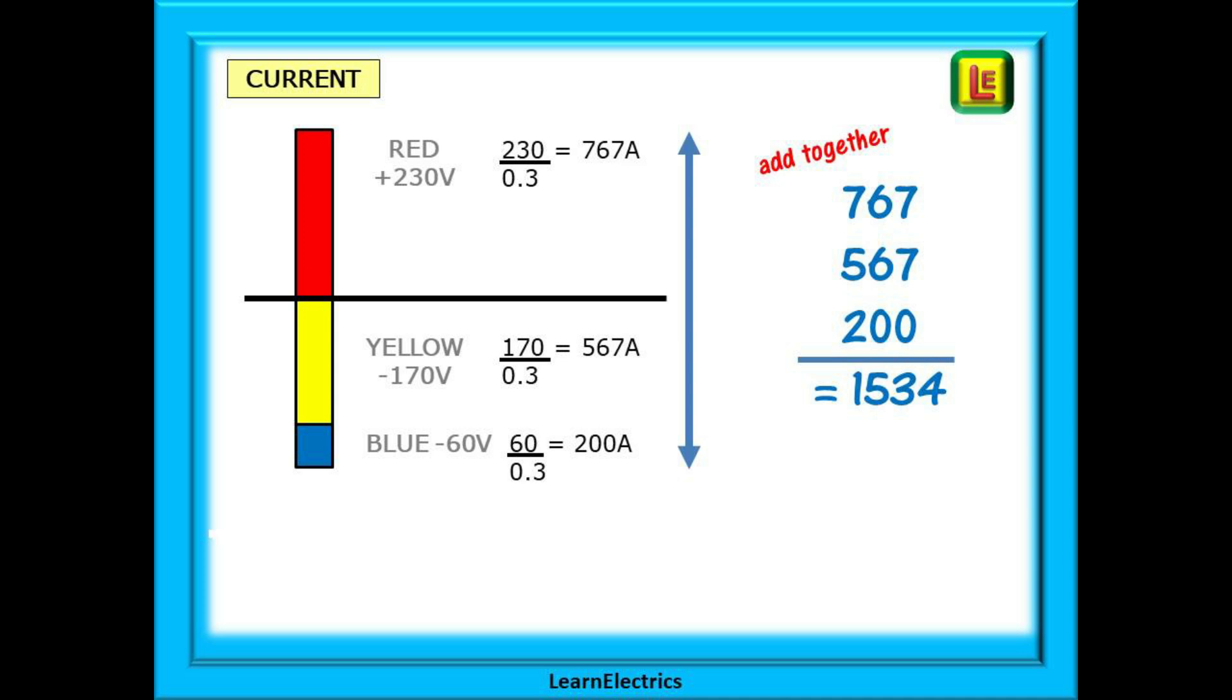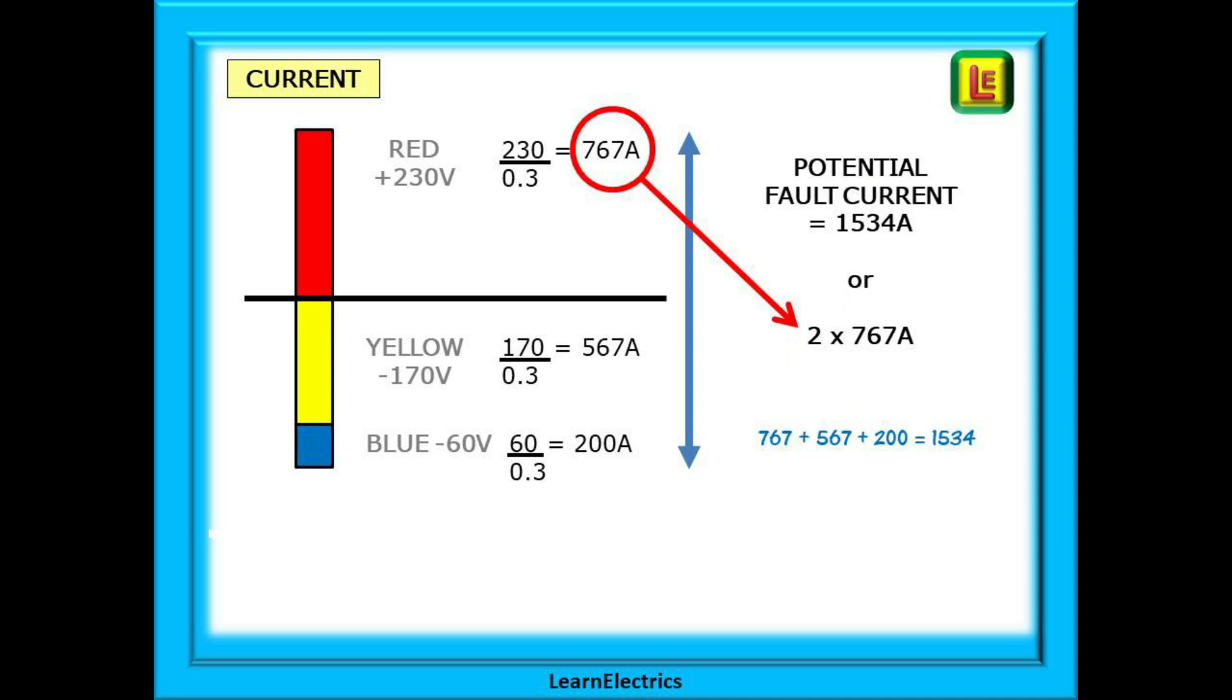767 plus 567 plus 200 is 1534 amps. 1534 amps is the same as 2 times 767. For a short across all three of the phase conductors at the same time, measure the single phase live to neutral fault current between live and neutral and then multiply by 2. Easy.